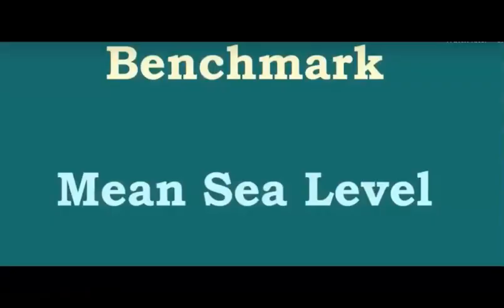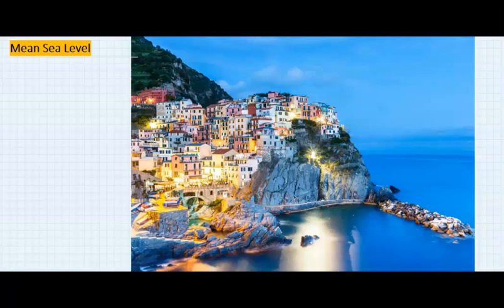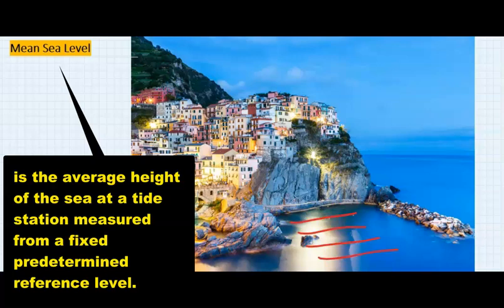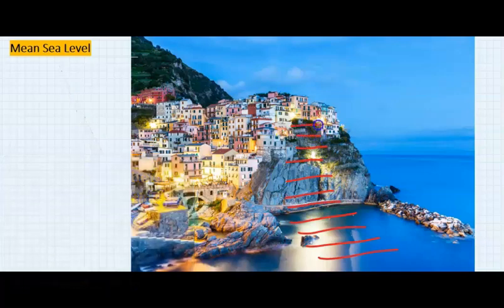What is a benchmark? What is mean sea level? The sea level is the level of the sea, and from this level there are different elevations. If this elevation is assumed to continue to the top of the highest structure, that means each building has a different level compared to the sea reference.